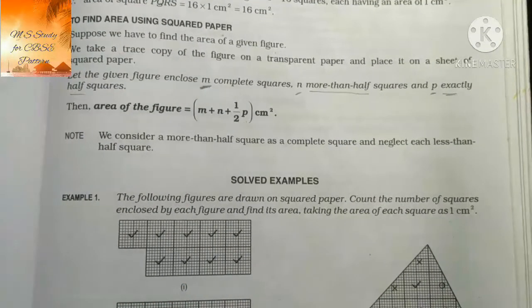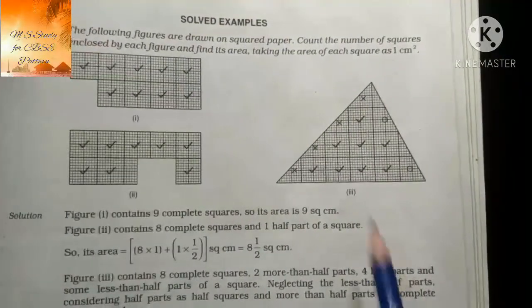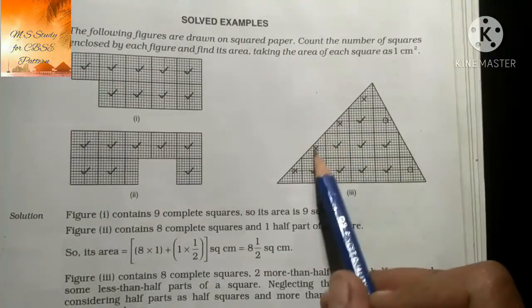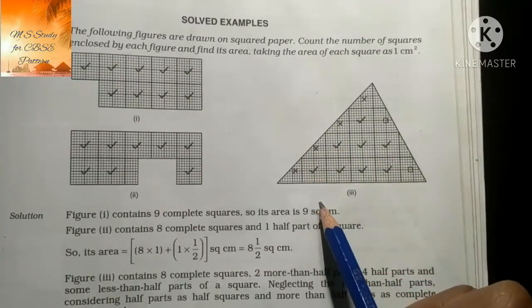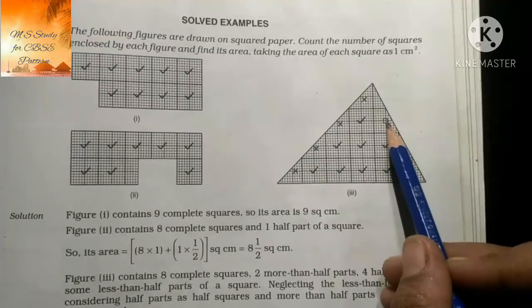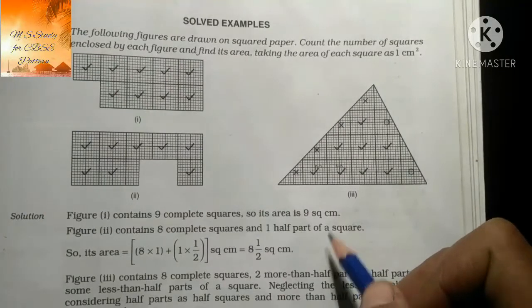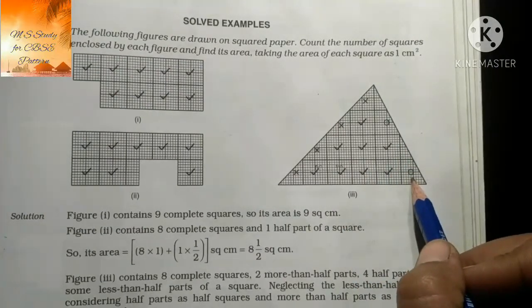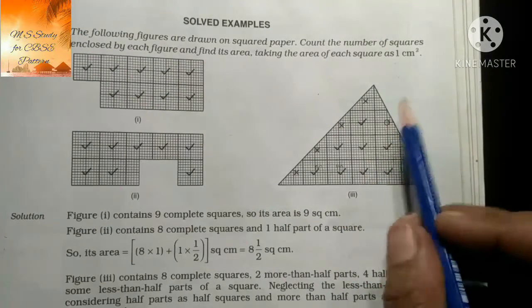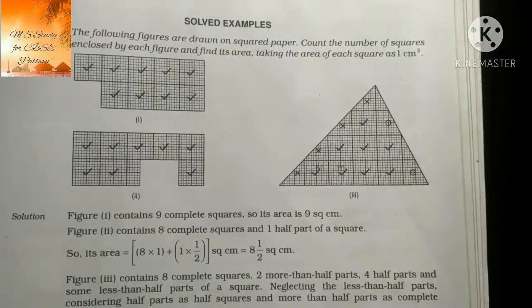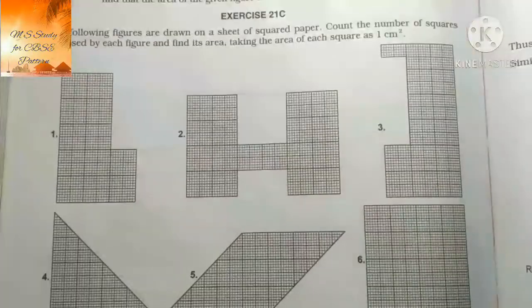तो जिससे देखें - जो right mark लगे वे complete squares हैं, जो cross लगे वे half squares हैं, और जो circle बना हुआ है वो more than half है। तो इन्हें हमें M, N, और P let करना है। इसके according हमारा answer easily आ जाएगा। इसे हम exercise के through समझते हैं। Exercise 21C है।